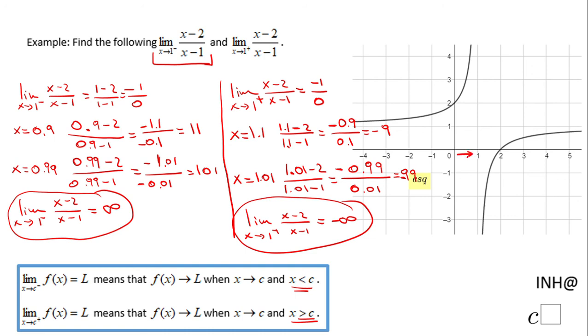We can see the same behavior in the picture. Once I get closer to 1 from the left side, the function is going up to positive infinity. Once I go closer to 1 from the right side, the function is coming from down here, negative infinity.